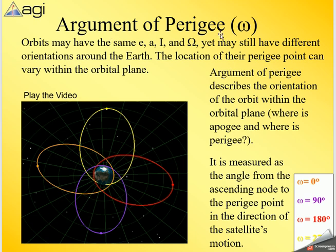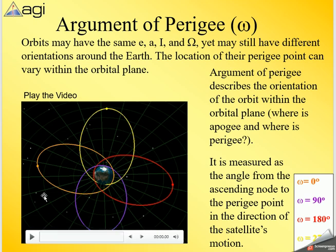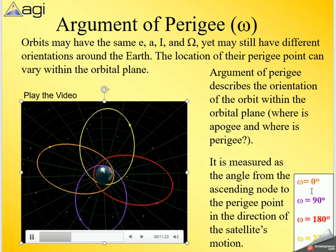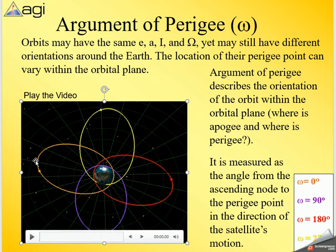The argument of perigee: orbits may have the same eccentricity, semi-major axis, inclination, and RAAN, yet still have different orientations within the orbital plane. The location of the perigee point can vary. The argument of perigee describes this orientation — the angle from the ascending node to the perigee point in the direction of satellite motion. Here W is the baseline at zero, 90-degree rotation is purple, 180 is red, and 270 is the last. The further the apogee, the more time the satellite spends looking over one area.